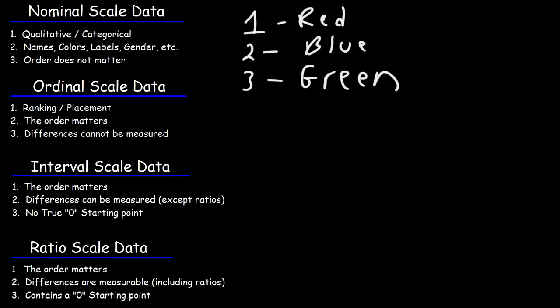The order in which we place it really doesn't matter. Red doesn't have a higher quantitative value than blue — it's all arbitrary. Blue could be number one or green could be number one. These qualitative forms of data cannot be used in calculation. However, the responses of people to these different colors, for example, can be used in calculation.